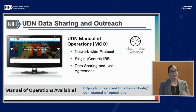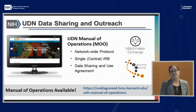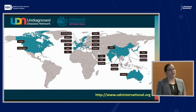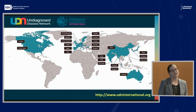We also share data through the Matchmaker Exchange. We put our data in through Phenome Central because we use HPO phenotypes to collect phenotypic data as part of our UDN evaluations. This allows us to share both phenotypes, HPO terms, as well as genetic variants and genes with others. That feeds into the Undiagnosed Diseases Network International, with a number of countries now involved, all sharing data through the Matchmaker Exchange to try and make matches for very rare conditions.